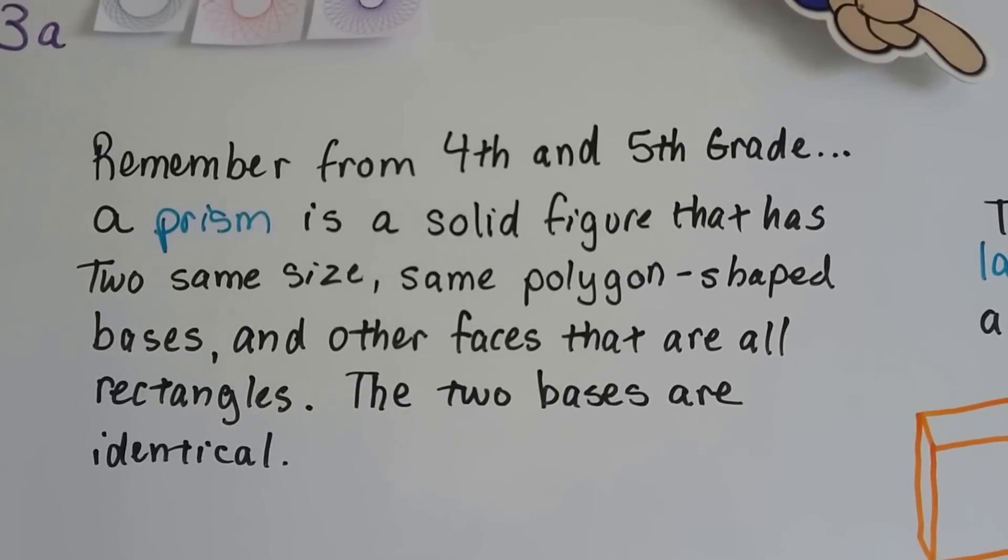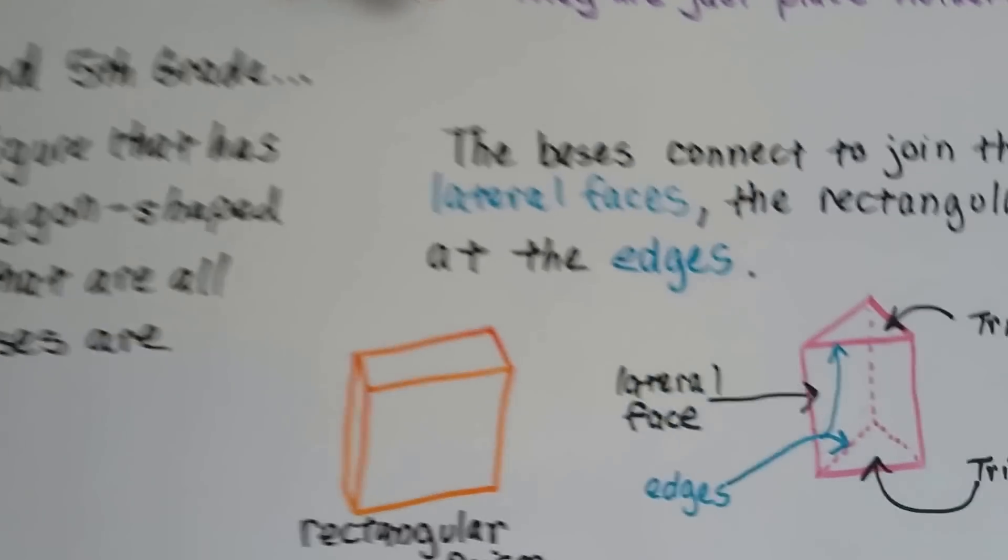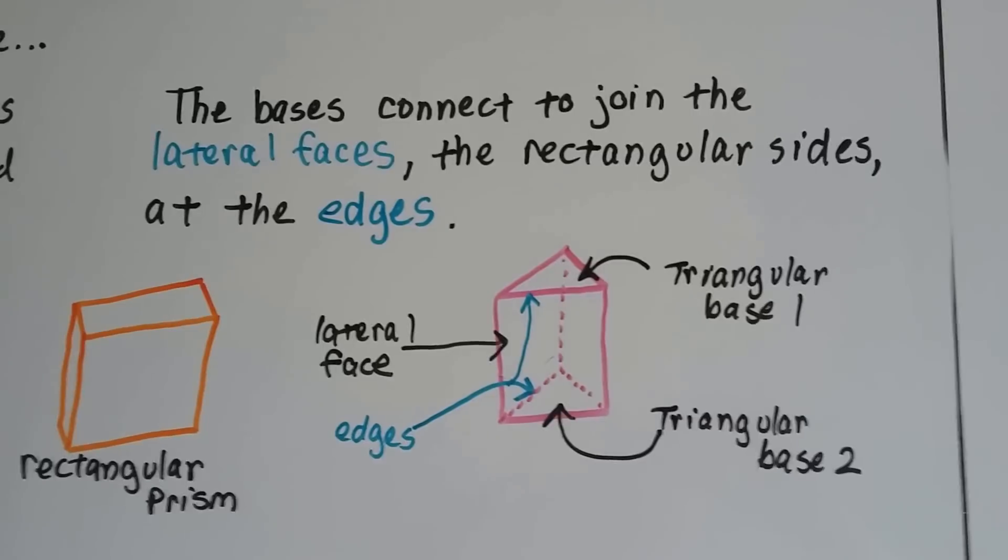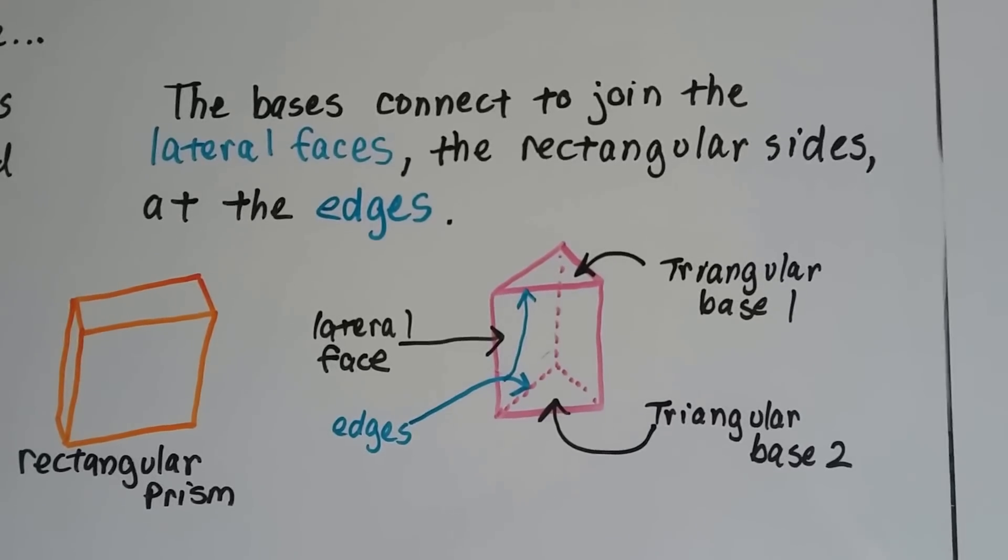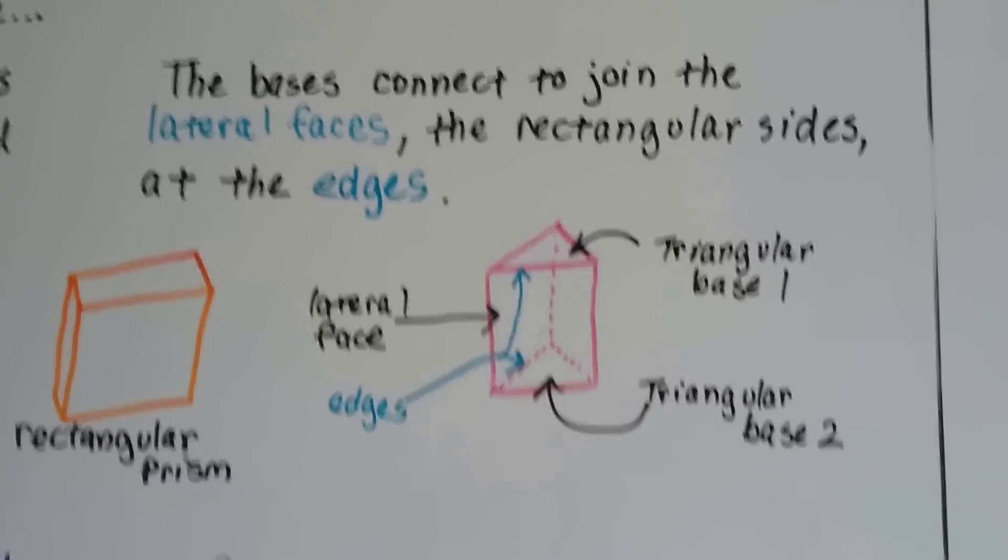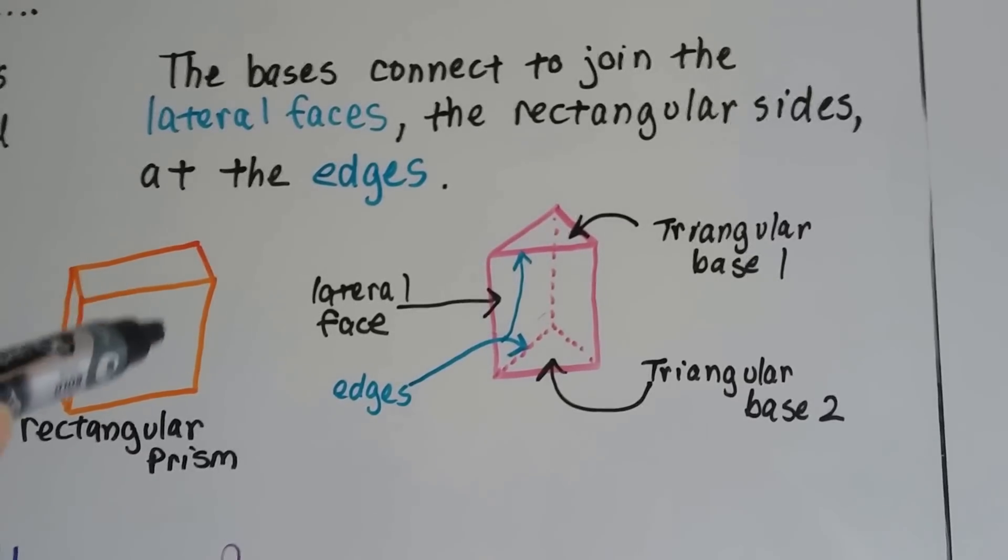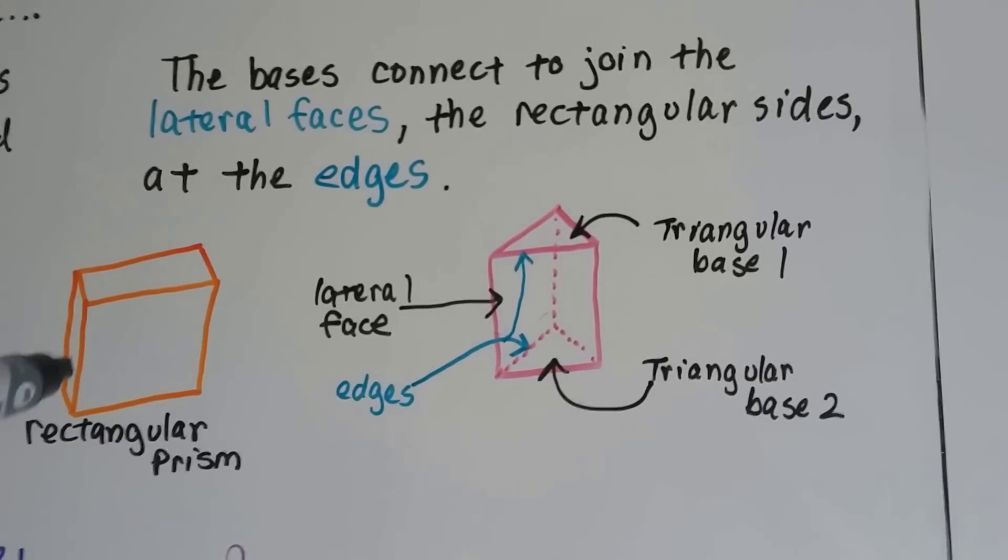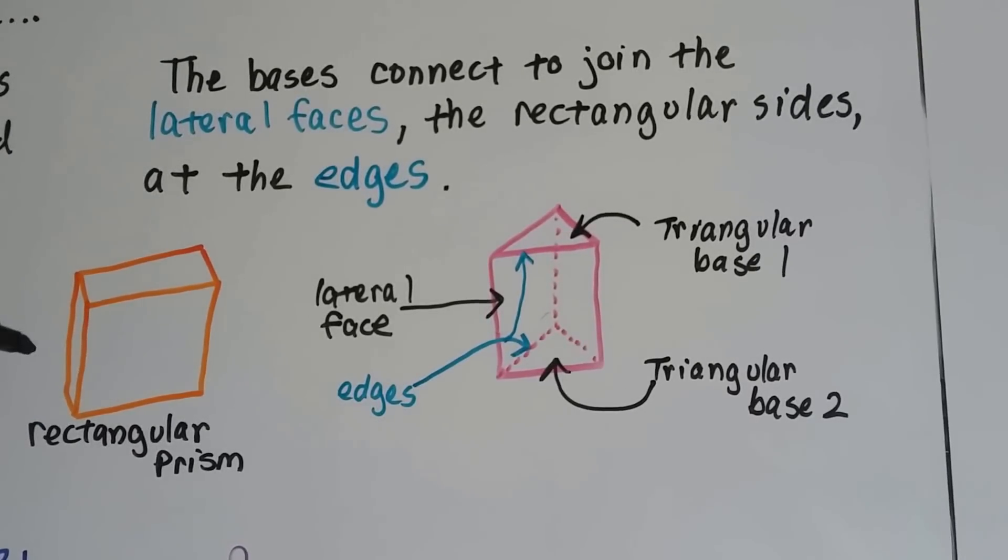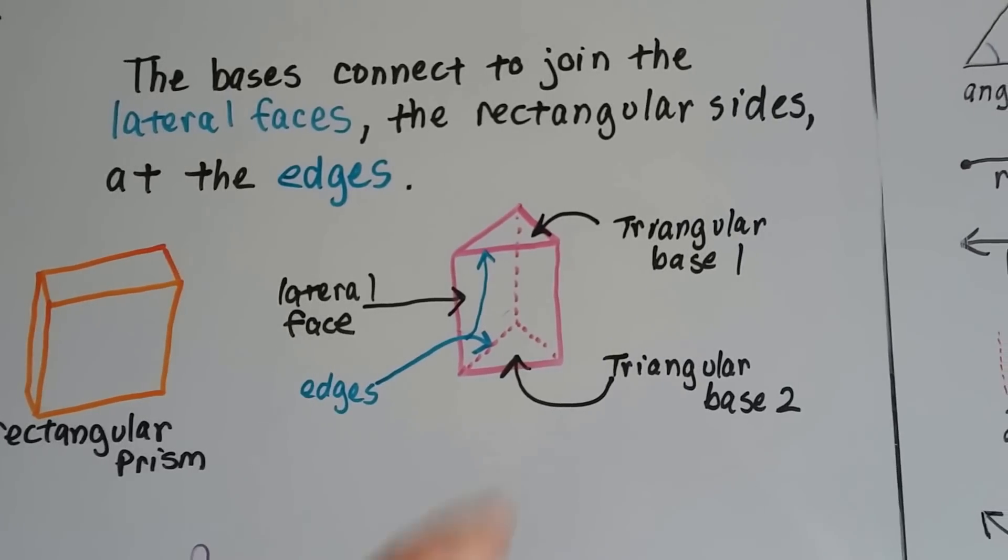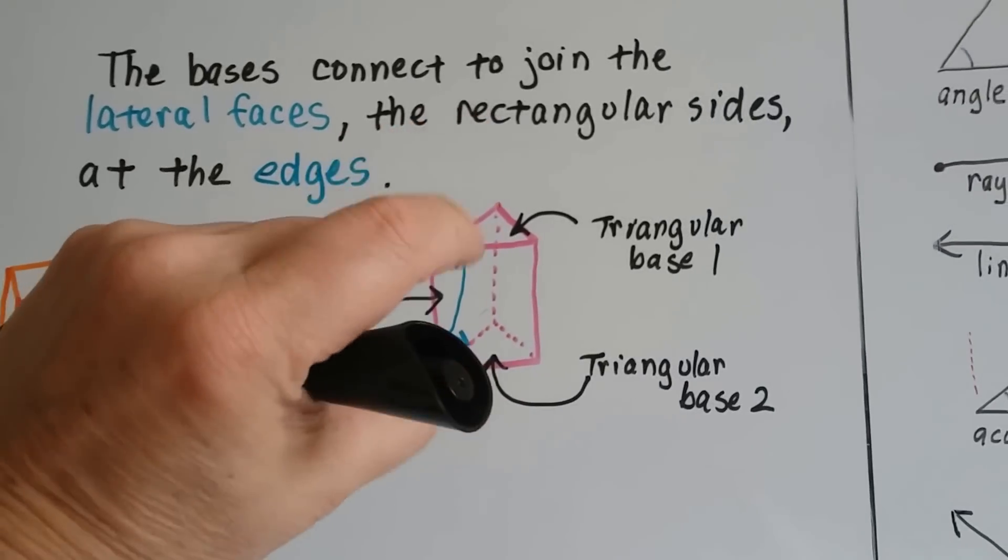The two bases are identical, so the bases connect to join the lateral faces, the rectangular sides, at the edges. On this rectangular prism, this is a face and this side's a face and there's one behind it, and then the top and bottom are the bases: base 1 and base 2.